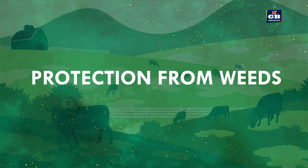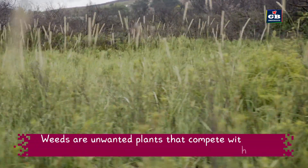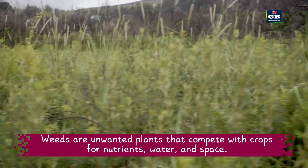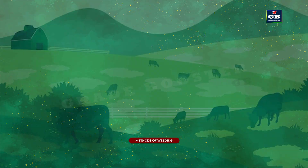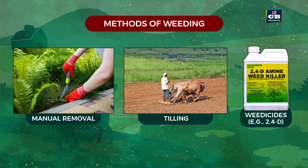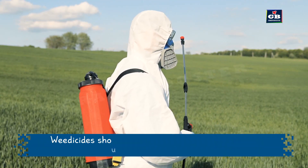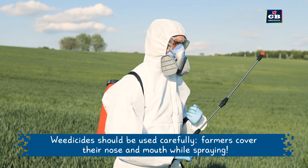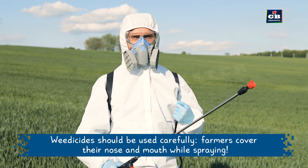Protection from weeds. Weeds are unwanted plants that compete with crops for nutrients, water, and space. Methods of weeding: 1. Manual removal — uprooting weeds with hands or using a khurpi. 2. Tilling — done before sowing to remove weeds. 3. Weedicides like 2,4-D — chemicals sprayed to kill weeds. Weedicides should be used carefully; farmers cover their nose and mouth while spraying.